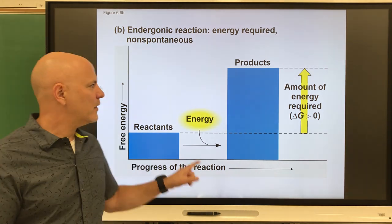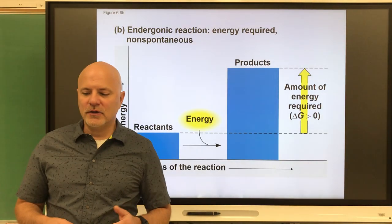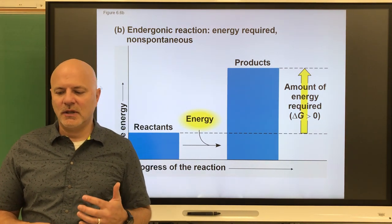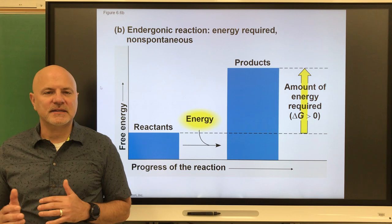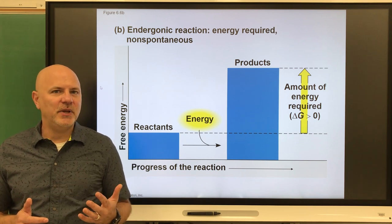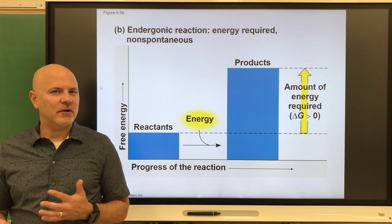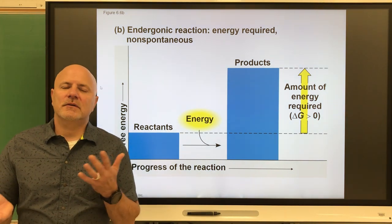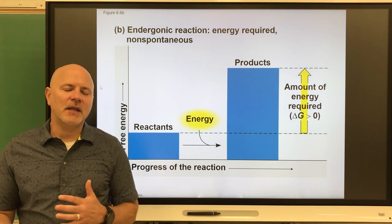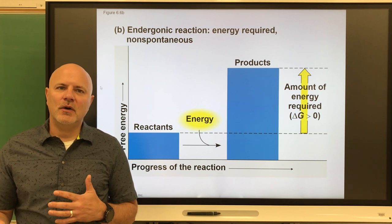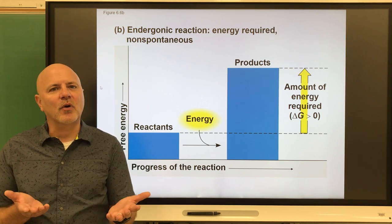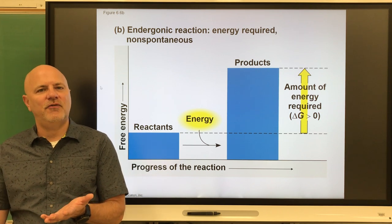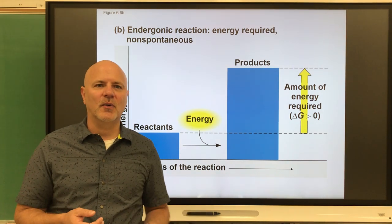A third situation is chemical equilibrium — a reaction that proceeds in both directions at the same rate: A + B produces C + D, but C + D can also produce A + B. These reactions have very little net energy, and the direction they shift depends on the concentrations — more A and B shifts toward C and D, and more C and D shifts back toward A and B.